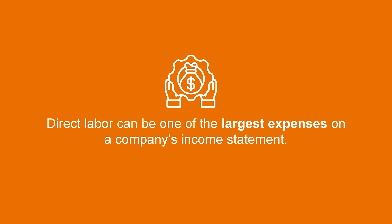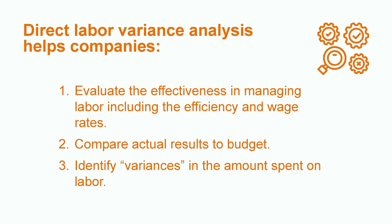Direct labor can be one of the largest expenses on a company's income statement. Companies spend a significant amount of money each period on salaries and wages paid to their employees directly involved in the production process. The ability to manage and control these costs affects the overall profitability of the business. In order to plan for future operations and control spending, most companies produce direct labor budgets, which they can use as a tool to evaluate how effective they were at managing both the rate and efficiency of their labor.